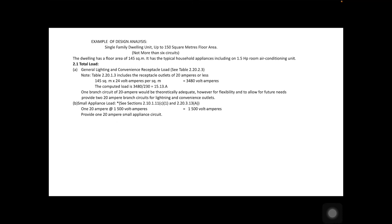For the small appliance load — for example, a refrigerator, oven, and microwave oven — we check section 2.10.11.1.C.1 and section 2.20.3.13.E. We allocate 20 amperes at 1,500 volt-amperes as the apparent power for that load. We provide a 20-ampere small appliance circuit, assigned as circuit number 3.